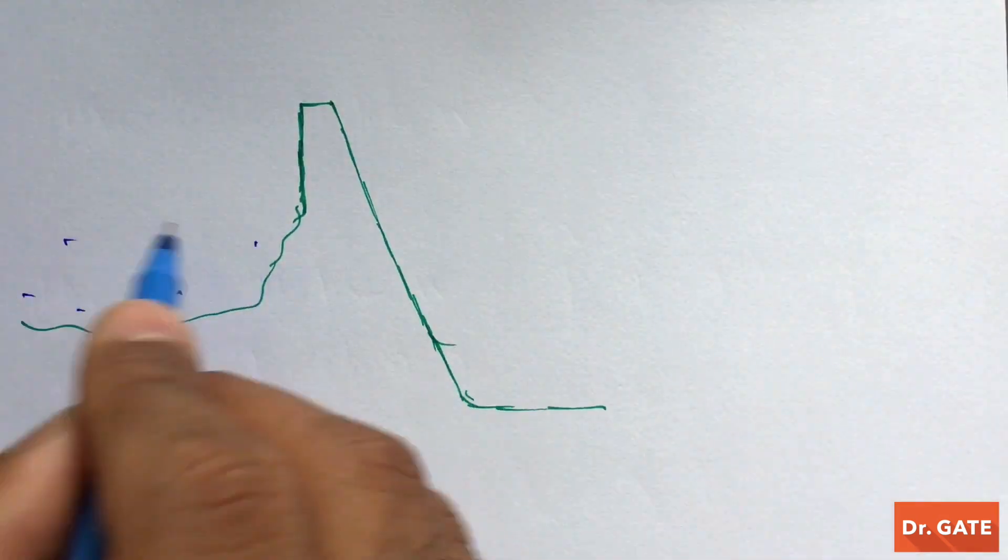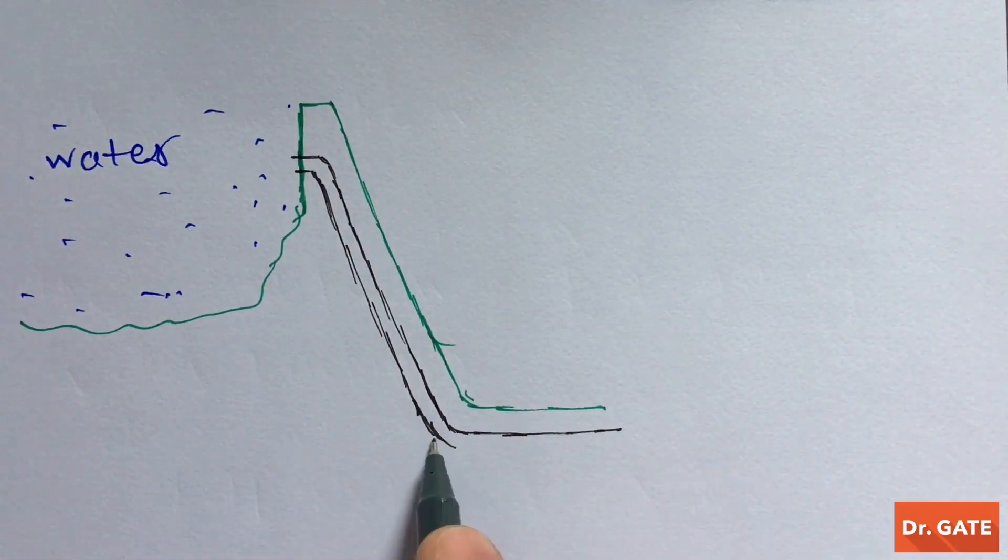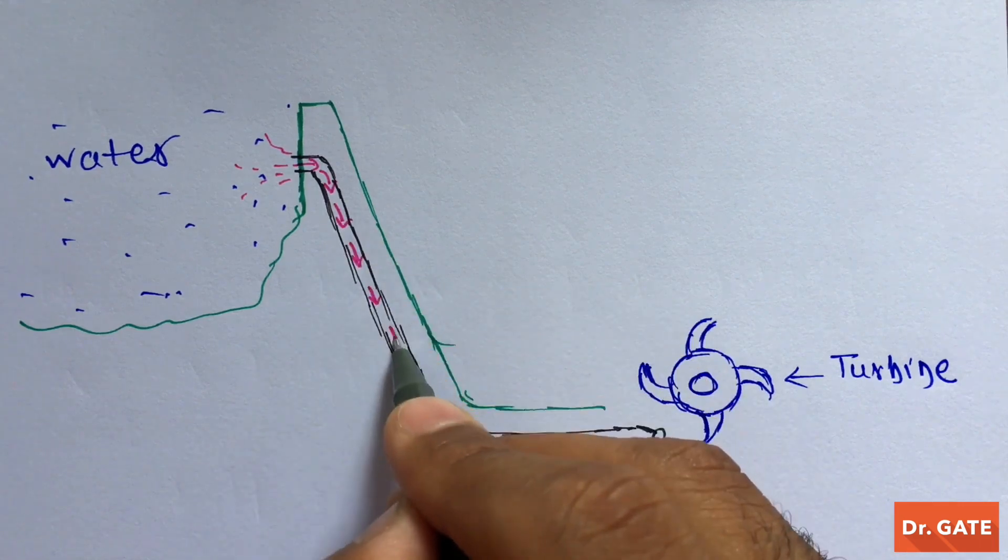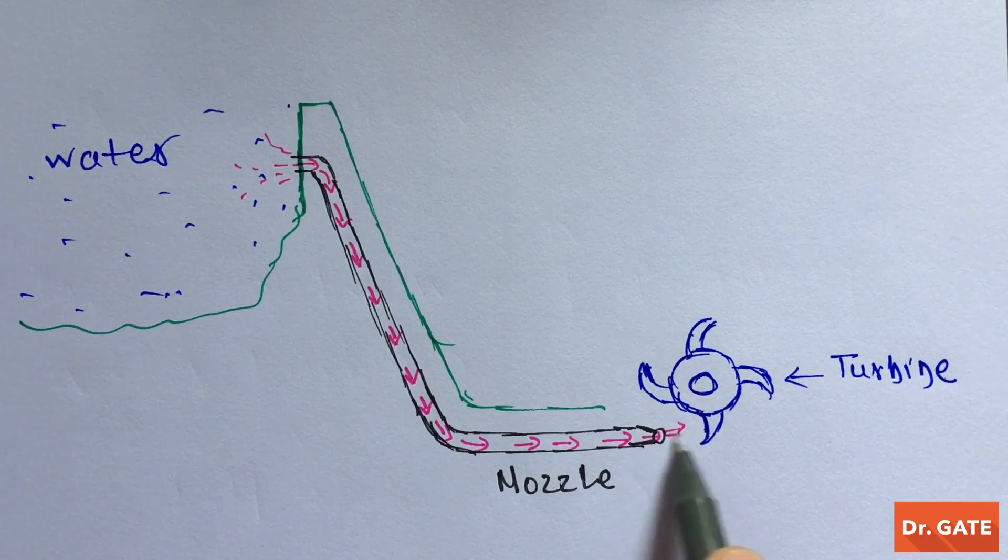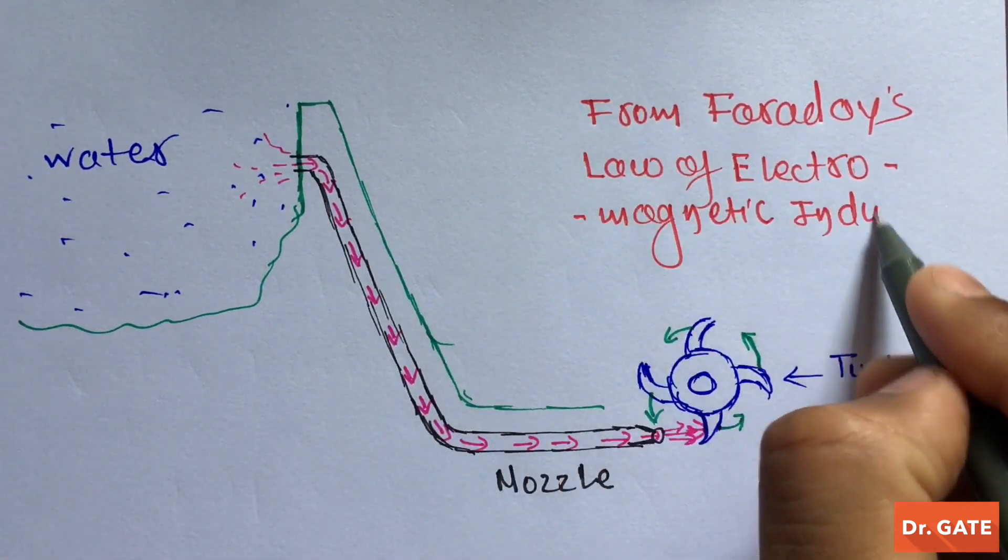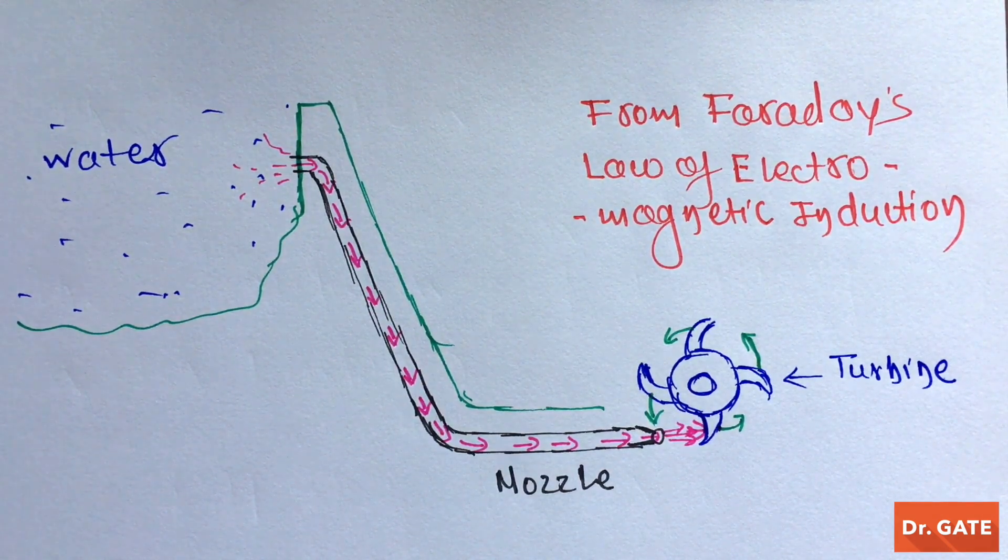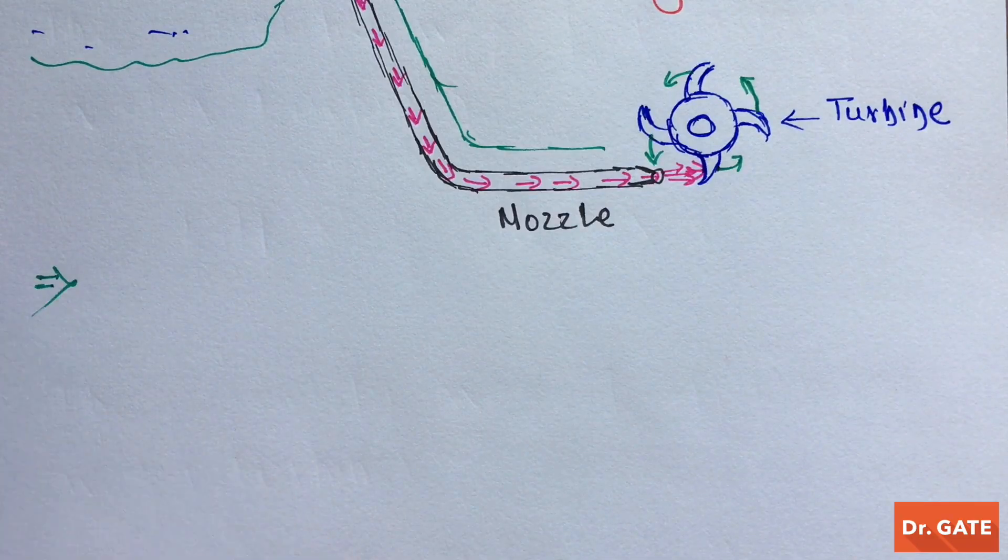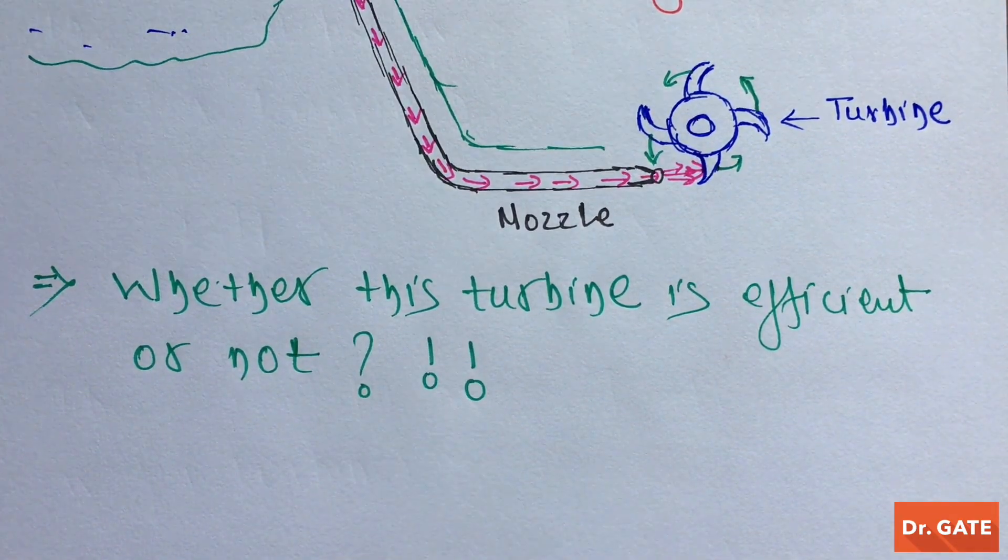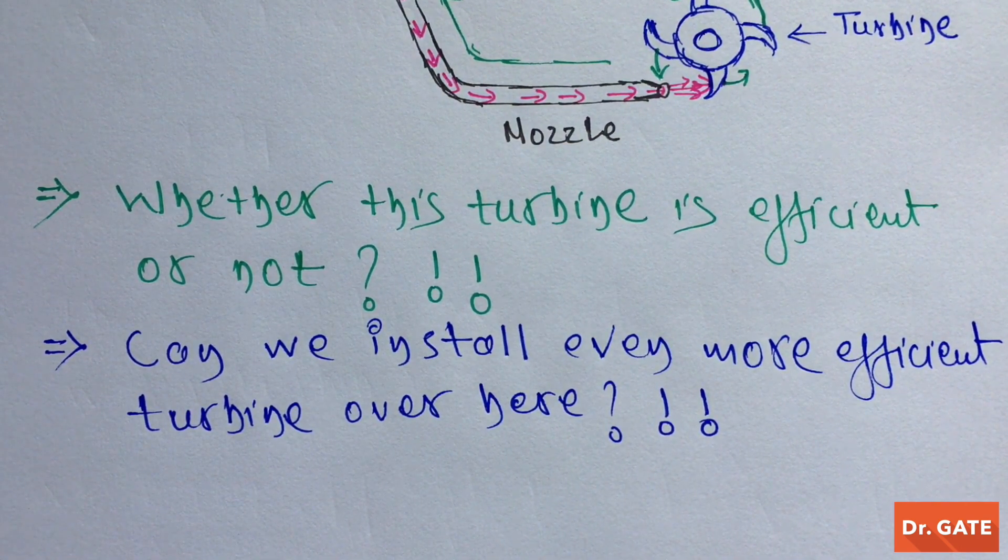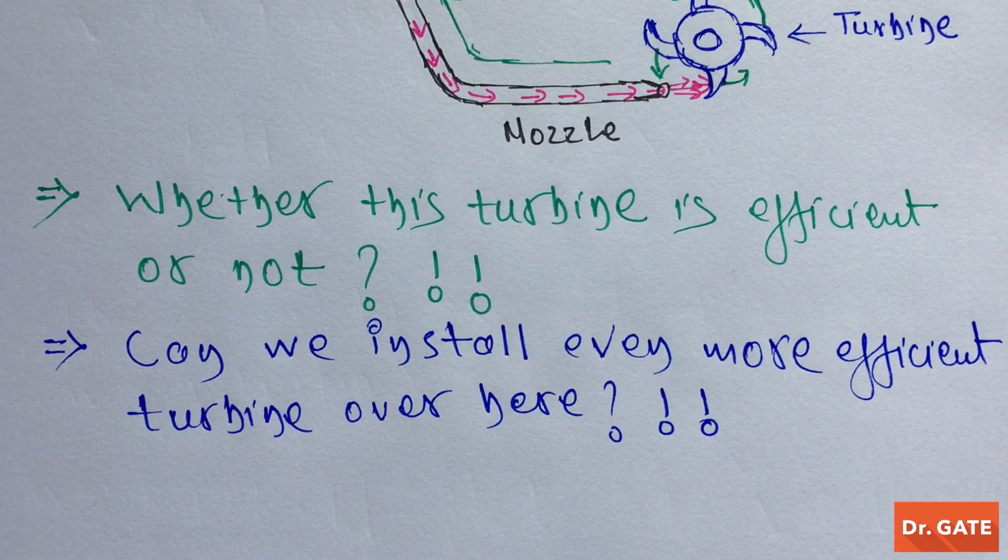Suppose we have a dam and we have a water reservoir over here. And this is the pipe which is connected to the nozzle. And here we have turbine. Then water in the reservoir will flow from here, converting its potential energy into kinetic energy. When high velocity jet strikes the turbine blade, the blade starts rotating. And from Faraday's law of electromagnetic induction, we convert mechanical energy into electrical energy. So, this entire setup is nothing but a typical hydroelectric power plant. Being an engineer, if you are wondering whether this turbine is efficient or not, if it is efficient, can we install even more efficient turbine over here? To get the answer of this question, we have to install different types of water turbine over here at different configurations, which is practically infeasible.